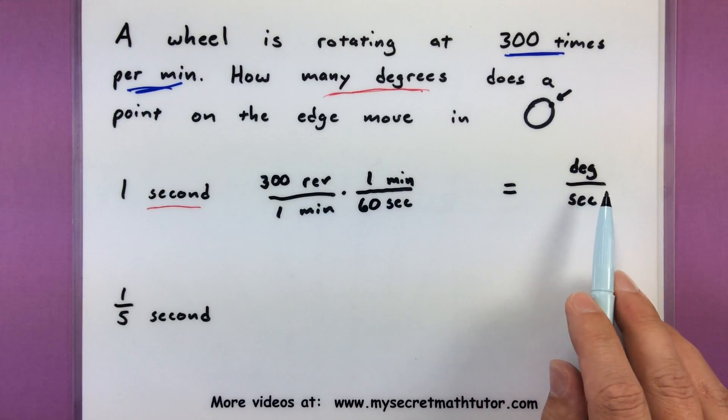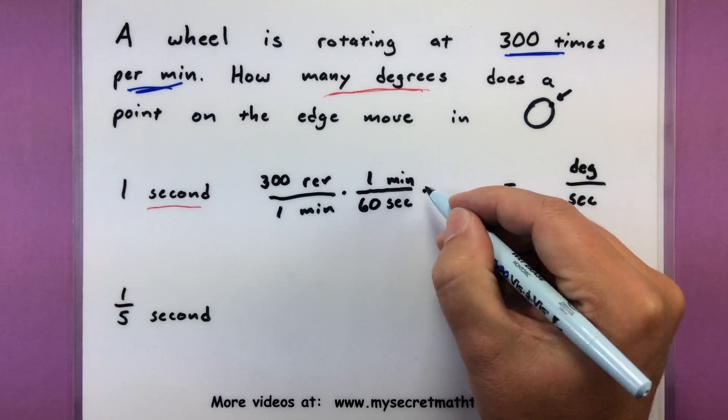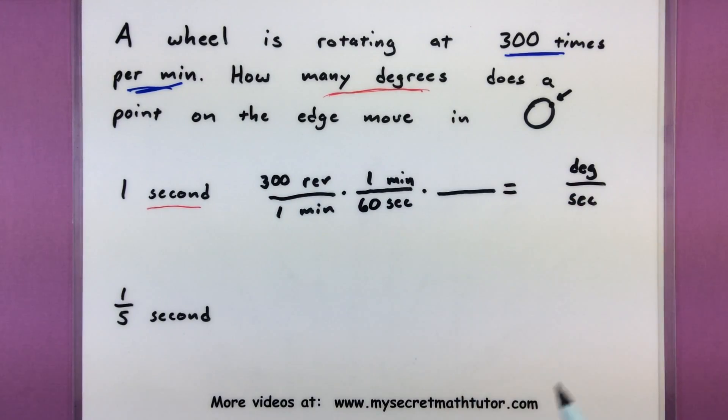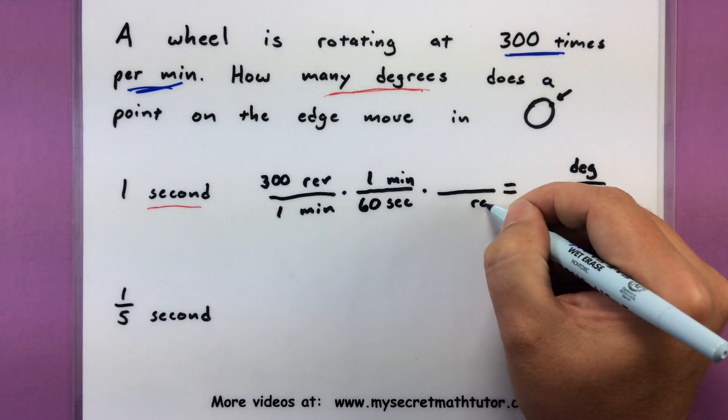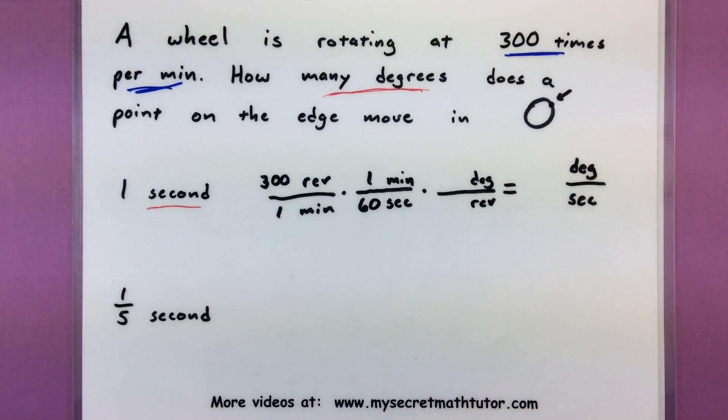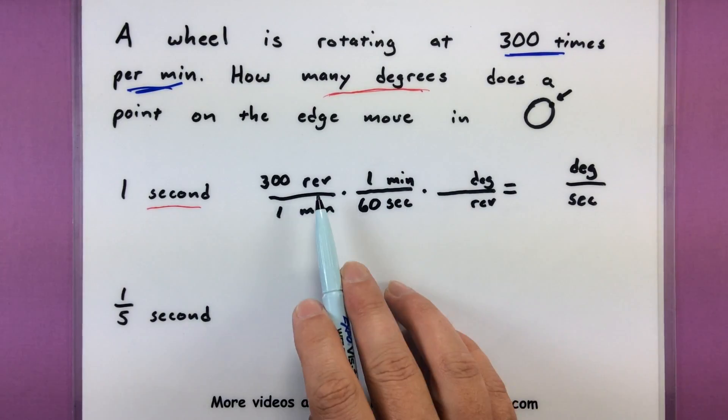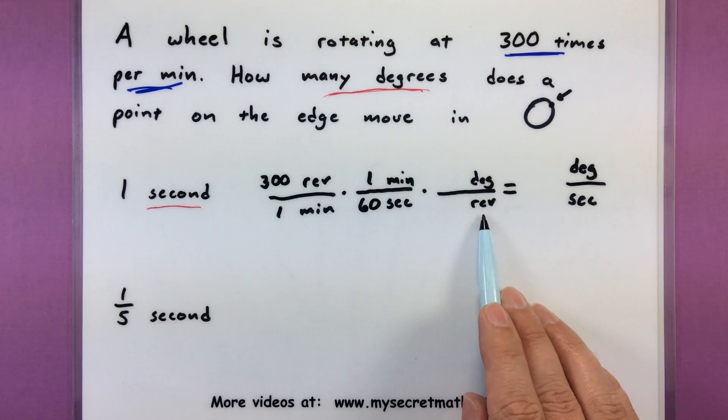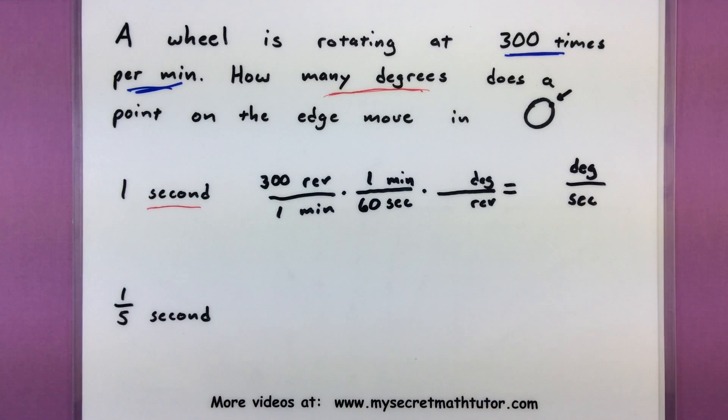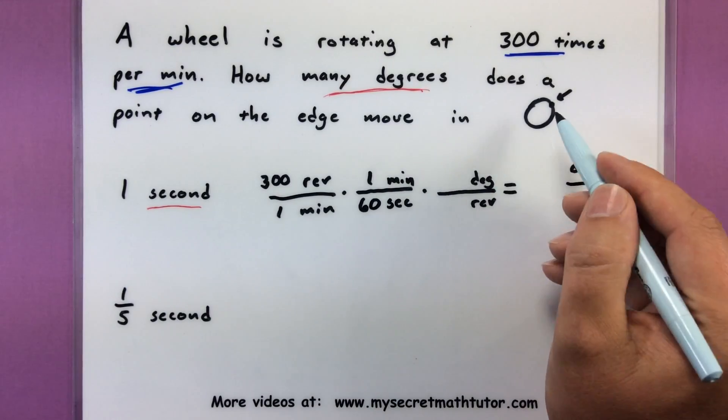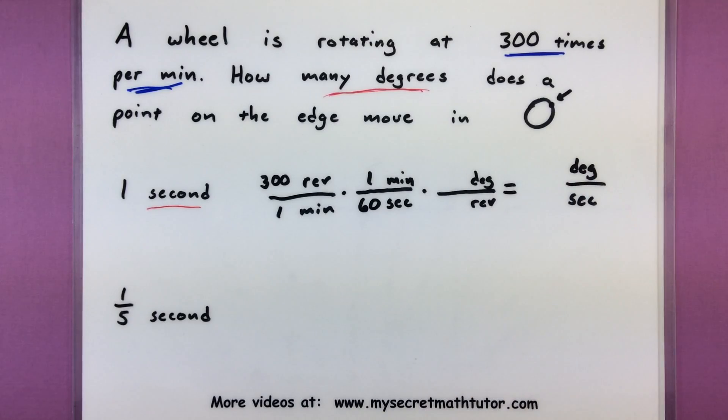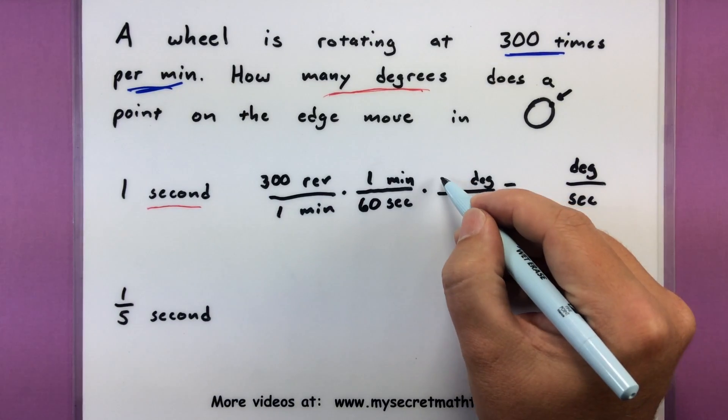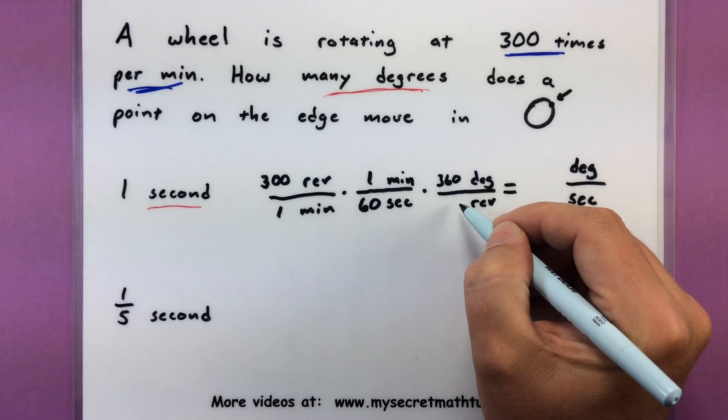Next thing we need is we need to turn revolutions into degrees. This time let's put revolutions on the bottom and degrees on top. Now I get my thought process on why this particular order is I want to get rid of revolutions. I want these guys to cancel out and only degrees to survive until the end. So revolutions on the bottom, degrees on top looks good. So what's the connection here? How many degrees are in one revolution? Well, if I take my circle, I go around one revolution once around, I get 360 degrees. So 360 in one revolution.